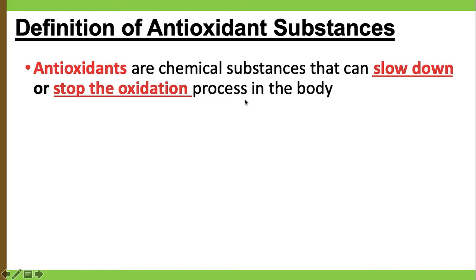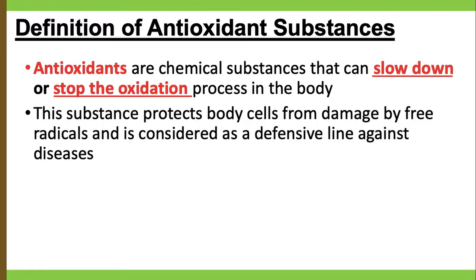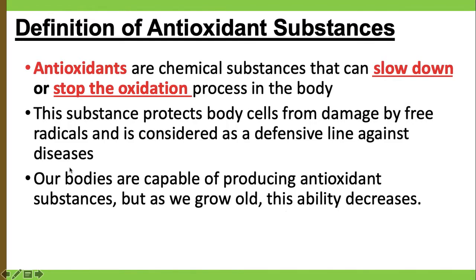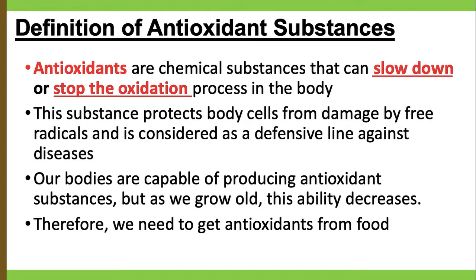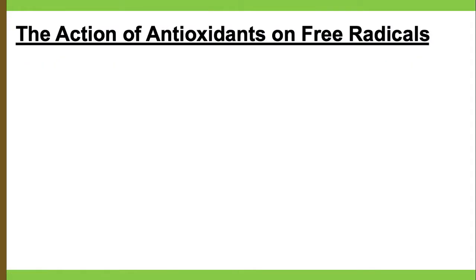Free radicals can attack and damage our body cells. Antioxidant substances can help to protect body cells from damage by free radicals, and are considered the defense line against disease. Our body is capable of producing antioxidant substances, but as we grow older this ability decreases. Therefore, we need to get antioxidants from food.